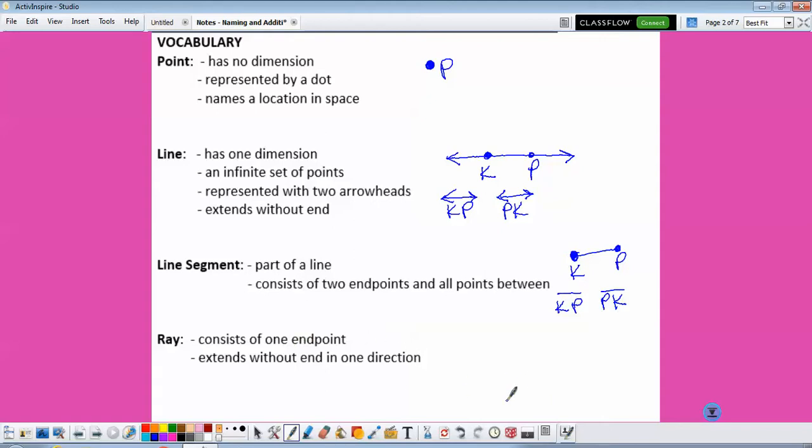A ray consists of one endpoint and extends in one direction without end. This is K, and this is P, this would be ray KP. It could not be ray PK because the letter that we start with is always going to be the endpoint. If we wanted to do ray PK, P would have to be the endpoint, and then it extends forever in the direction of K.